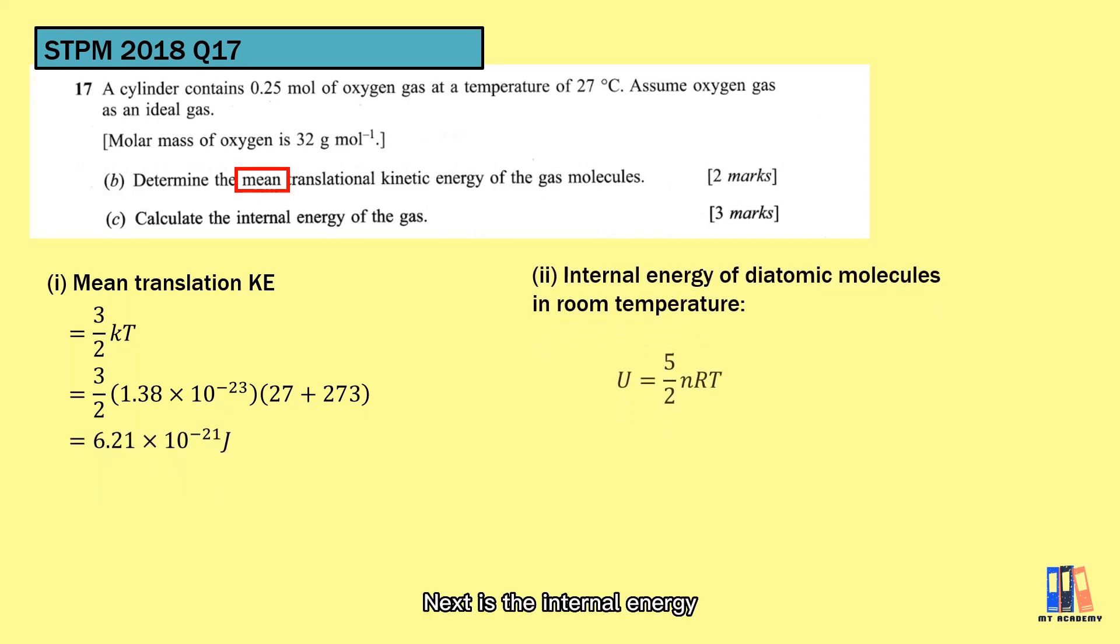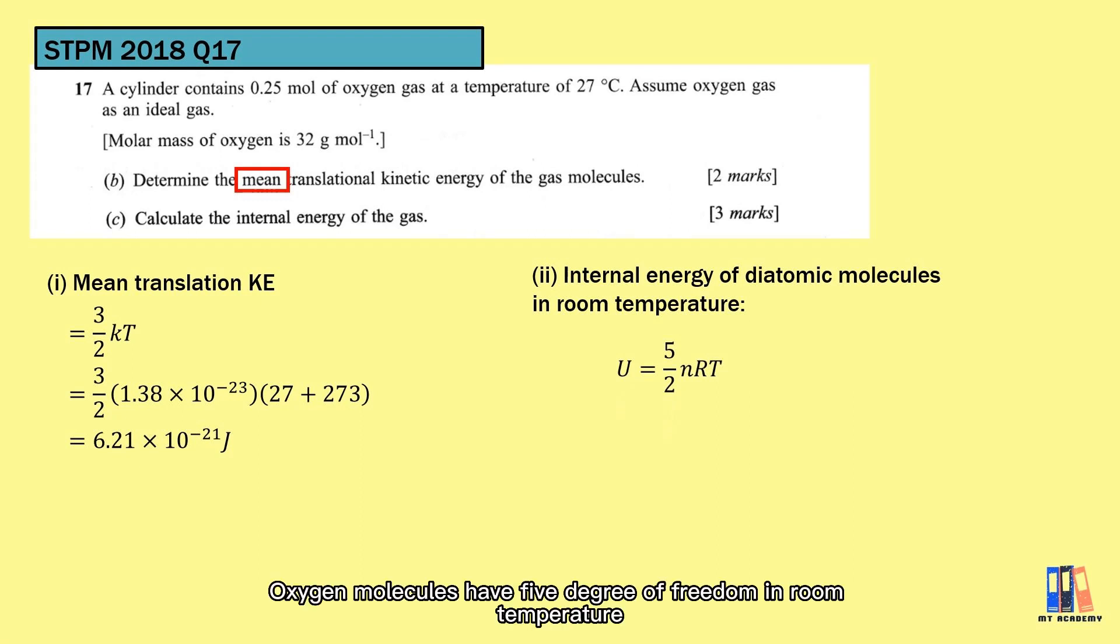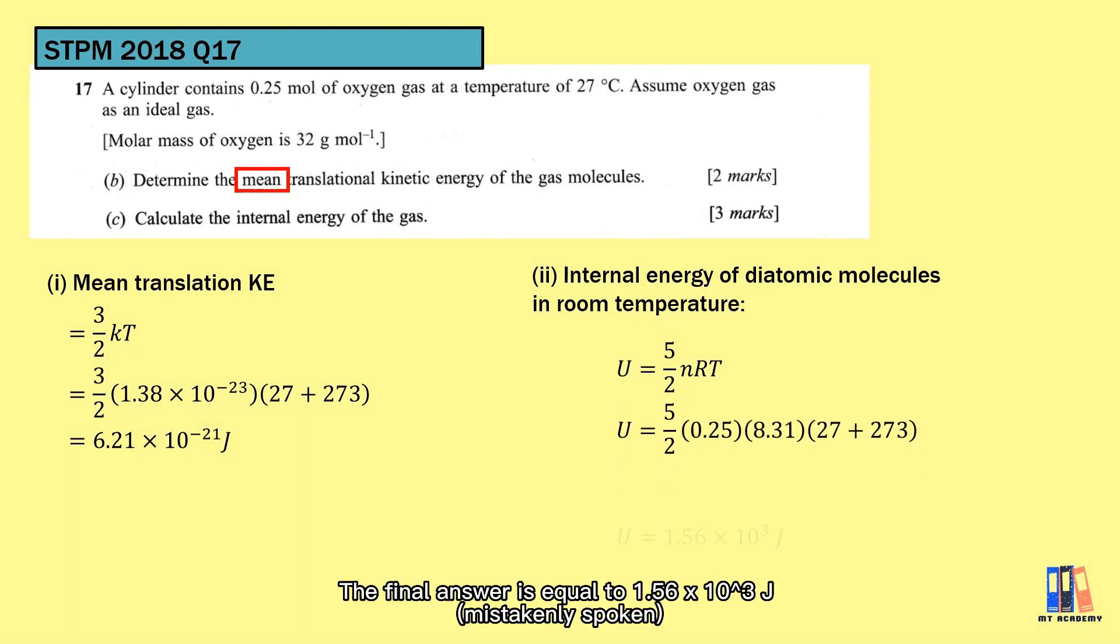Next is the internal energy. So here we will refer the formula that we have learned in this video. Oxygen molecules have 5 degrees of freedom in room temperature. So we have the formula as 5 over 2 nRT since the number of moles is given in this question. So the final answer is equal to 1.56 times 10 to the power of 4 J.